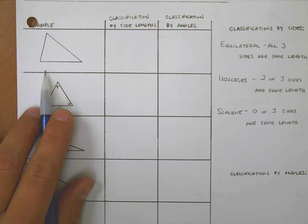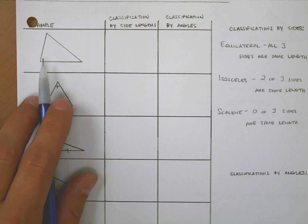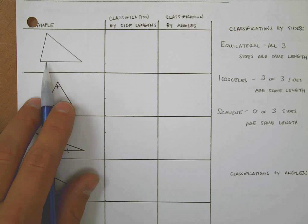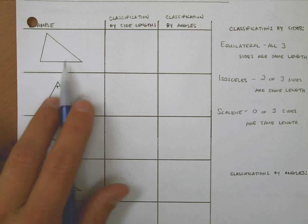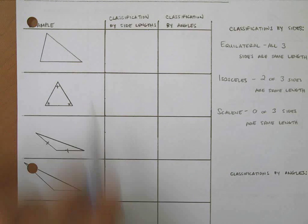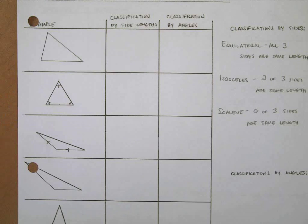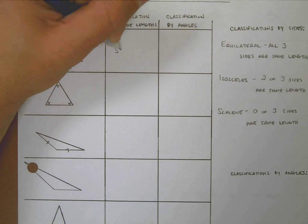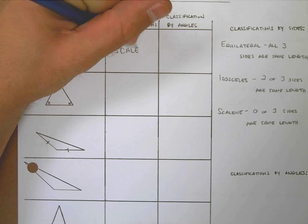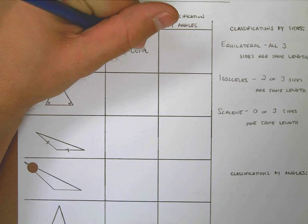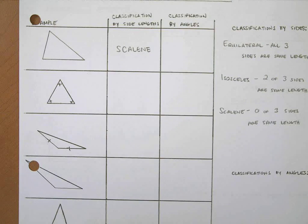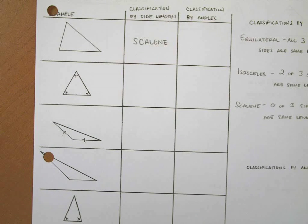If I wanted to classify this triangle based on its side length, I would simply look at it — no tick marks means none of the sides are the same that I know of. I could go through with a ruler, maybe they're close, but right now we're just going based off tick marks. No sides the same length, so we would call this a scalene triangle.